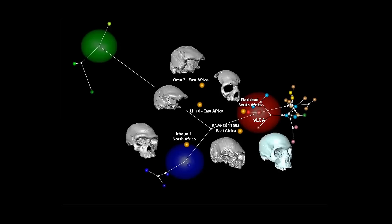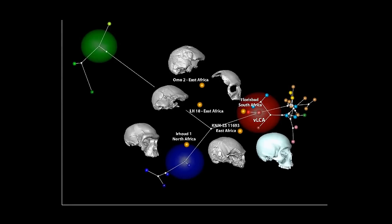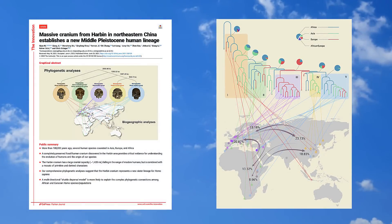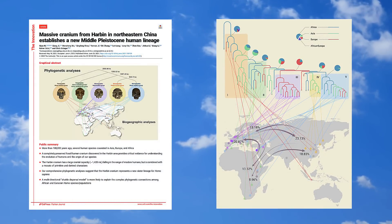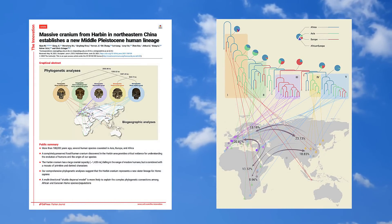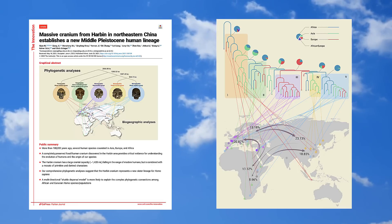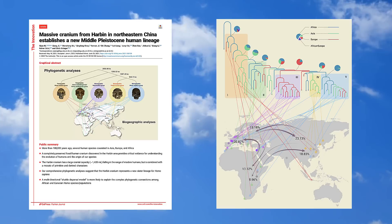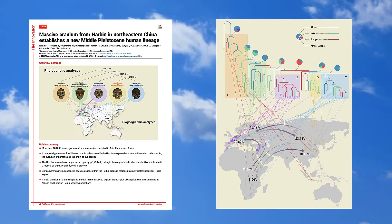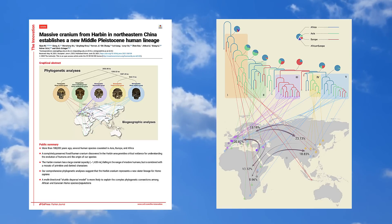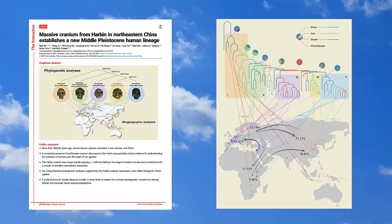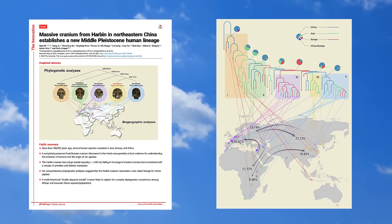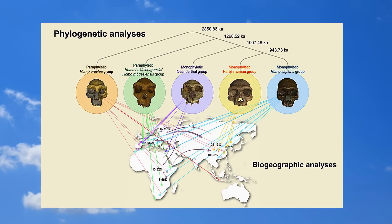In another peer-reviewed paper, scientists suggest that a multidirectional shuttle dispersal model is more likely to explain the complex phylogenetic connections among African and Eurasian hominin species and populations. According to the study, sympatric diversification and founder-event dispersal are the most dominant biogeographical modes, reflecting the coexistence of multiple human lineages in Africa, Europe, and Asia during the middle and late Pleistocene. These lineages probably had a strong capability for long-distance dispersal but remained in relatively small and isolated populations.